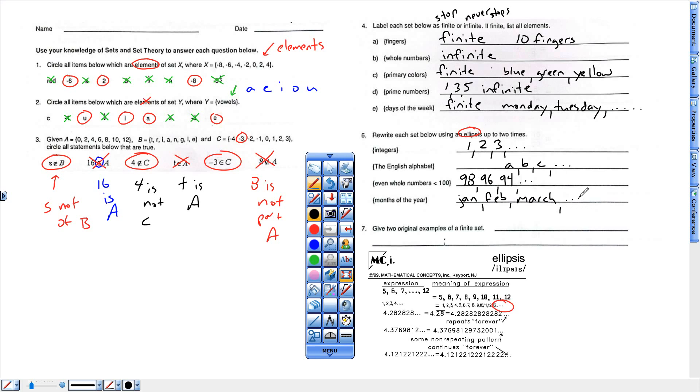Give two original examples of a finite set. So a finite set would be a pack of 10 socks. So that pack of socks, there's only 10 in there. That's a finite number. I would say number of classes each day. So there's a certain amount of classes each day. Here at Ventura, we have seven classes each day.